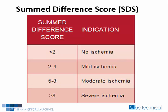The summed difference score less than 2 indicates no ischemia. The summed difference score that equals 2 through 4 indicates mild ischemia. The summed difference score that equals 5 through 8 indicates moderate ischemia. And the summed difference score greater than 8 indicates severe ischemia.